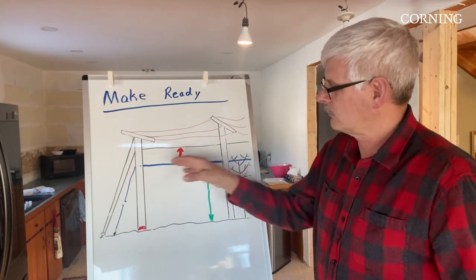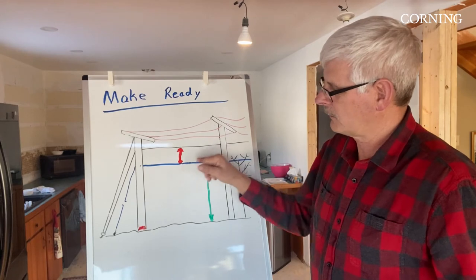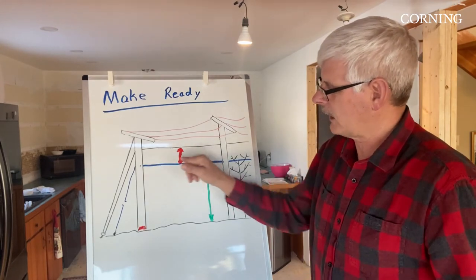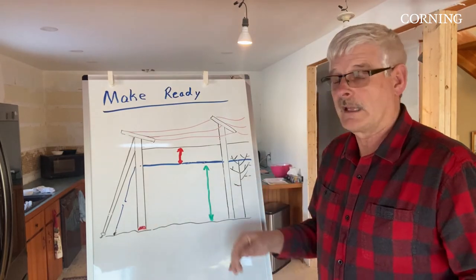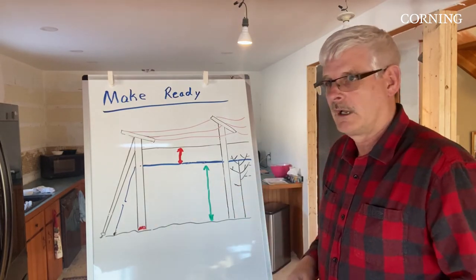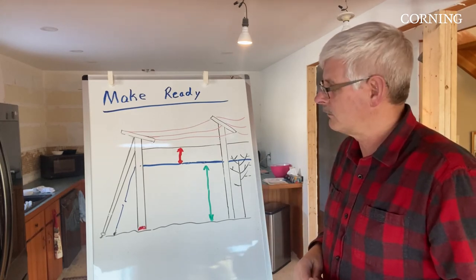The other things they'll look for on the existing communications lines will be the down guy. In this particular case, we have a down guy that supports the cable that anchors the pole line and the down guy is broken. That would have to be fixed before they would accept your request to put a fiber cable on the poles.